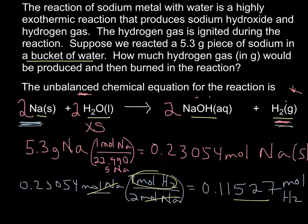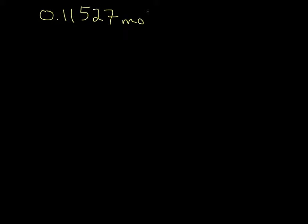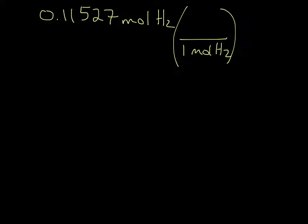Moving to the next step, we have 0.11527 moles of hydrogen gas, and we need to convert that to mass. In every one mole of hydrogen gas — looking at the periodic table, H₂ is 1.008 grams per mole times 2, because we have two hydrogens per molecule — we get 2.016 grams per mole of hydrogen gas. Multiplying: 0.11527 times 2.016 gives us 0.2324 grams of hydrogen gas.